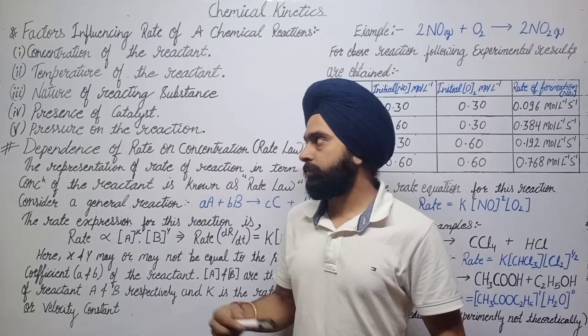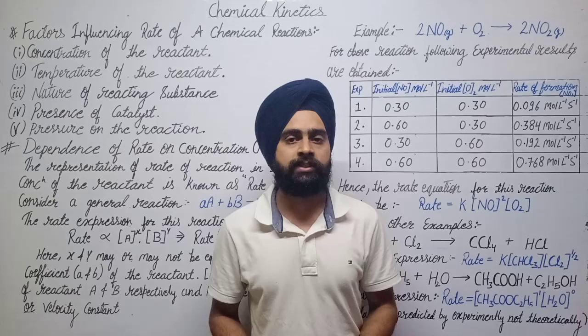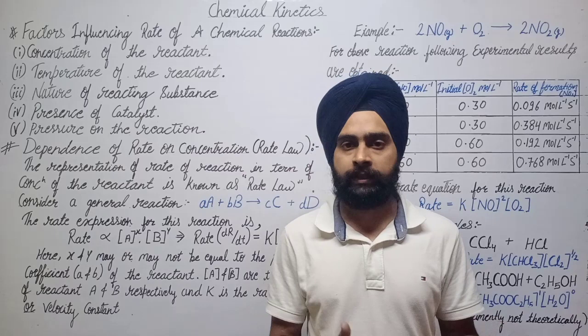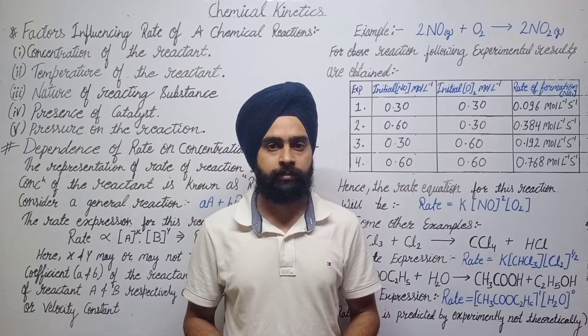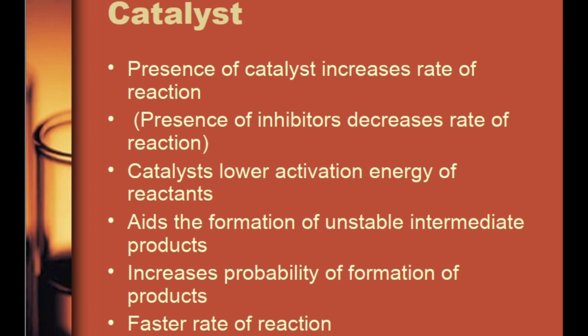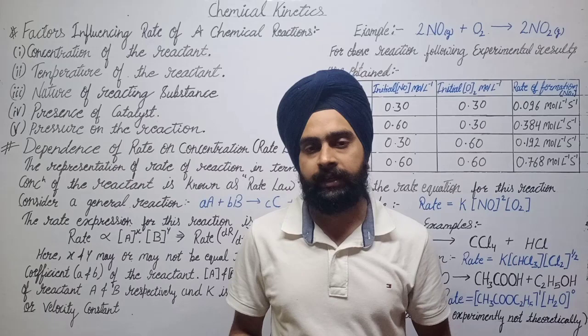The next factor is the presence of catalysts — compounds which can alter the rate of chemical reaction. Catalysts provide a different reaction pathway. The presence of catalysts increases the rate of chemical reaction. Generally, catalysts lower the activation energy of the reactant and form an unstable intermediate product, which further dissociates into the product molecule. Hence, a catalyst can alter the rate of chemical reaction. There is also a category of compounds called inhibitors.